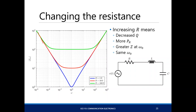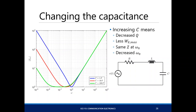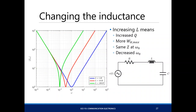At increasing resistance, your response will have a wider bandwidth. If you change the capacitance, your resonant frequency ω₀ will decrease and the selectivity increases. Increasing L has the same effect on resonant frequency — it decreases — but your selectivity will actually increase.